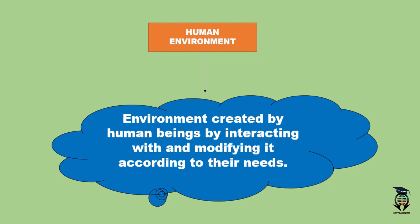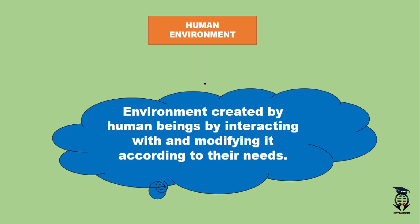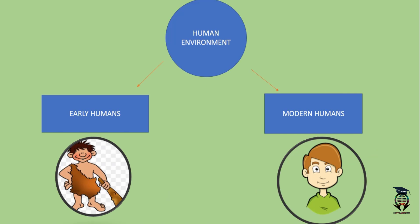Moving further, we can divide human environment into two parts — that is early humans and modern humans.